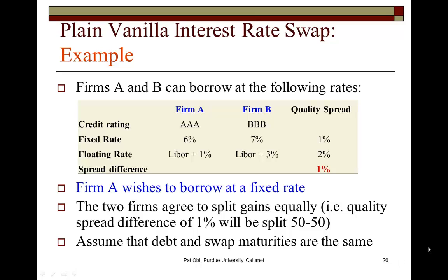This is a quick example of a plain vanilla interest rate swap. In a plain vanilla swap, one party agrees to pay the fixed rate while receiving the floating interest rate from the counterparty.